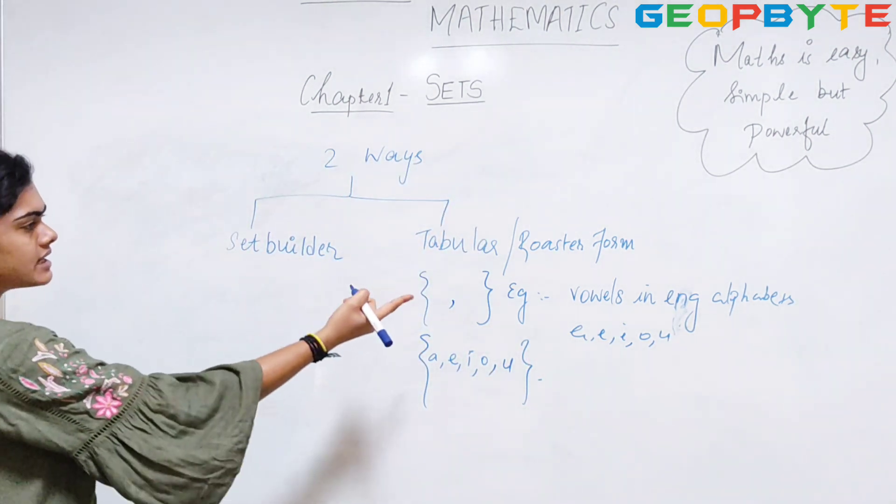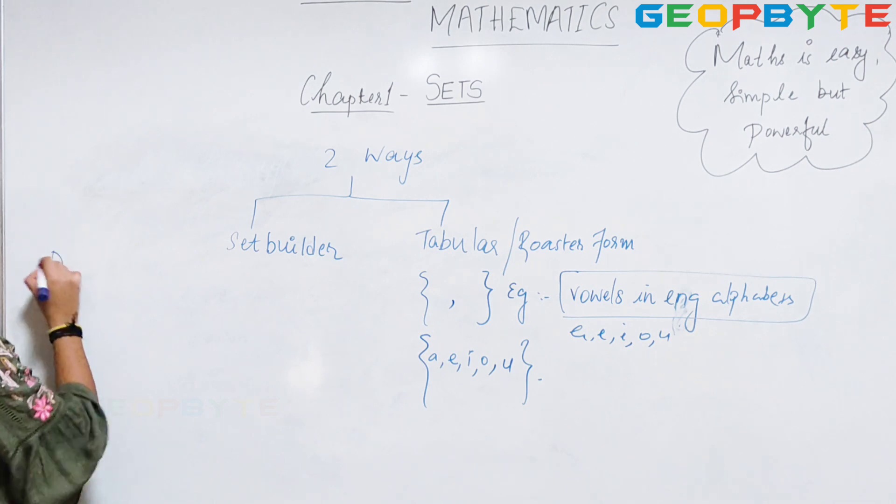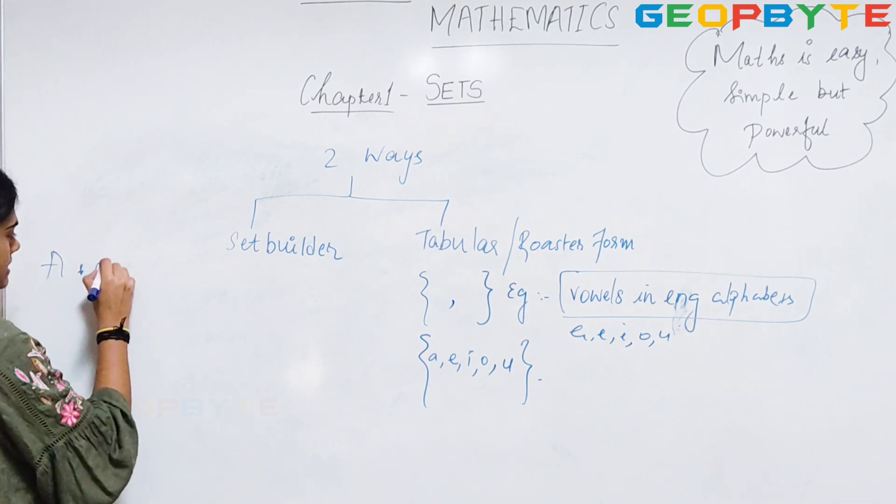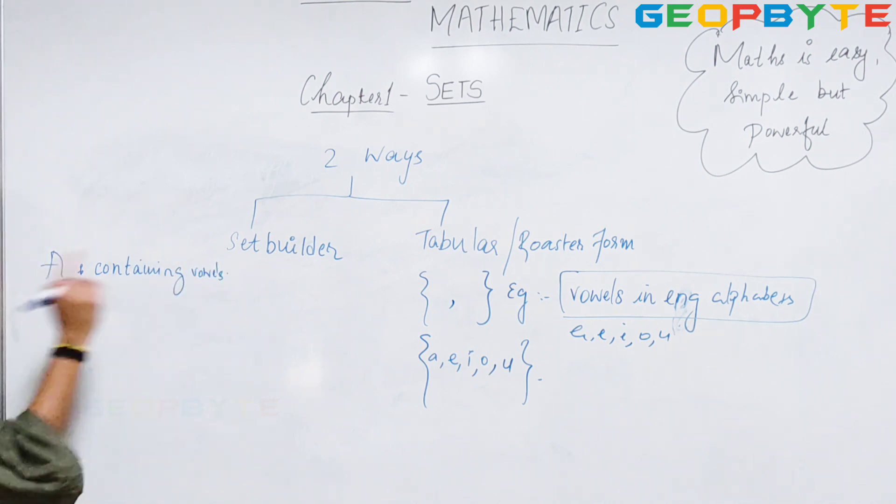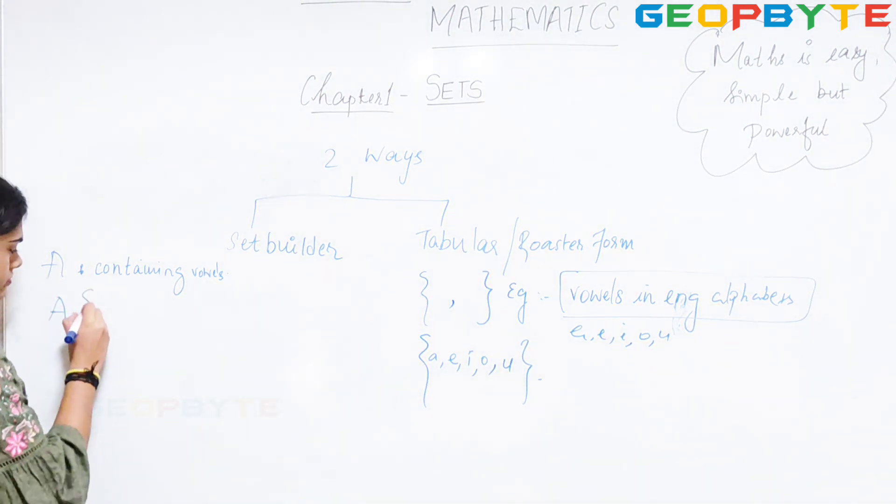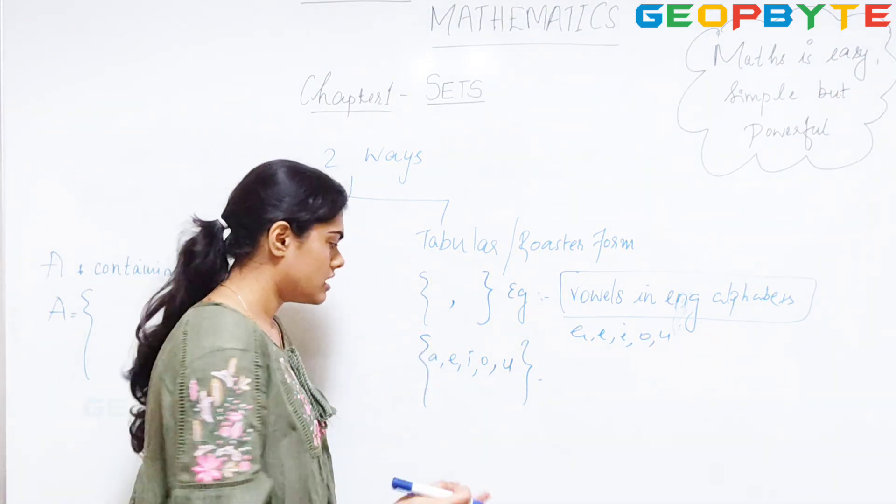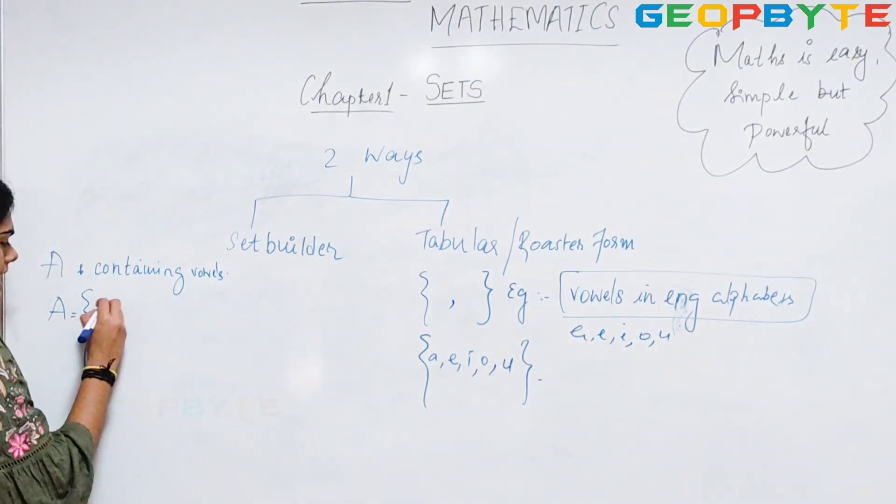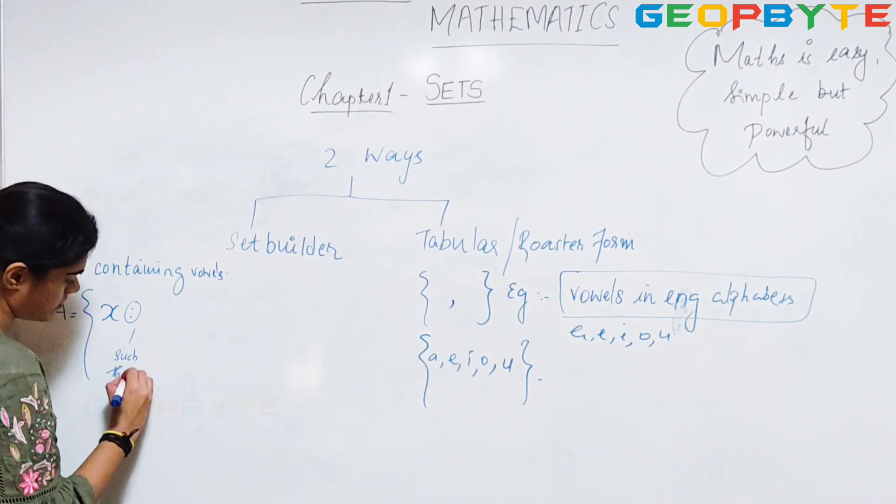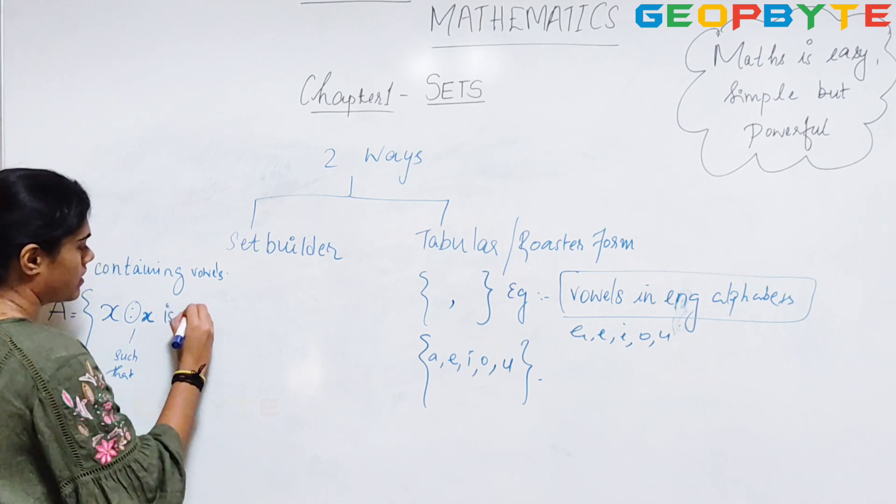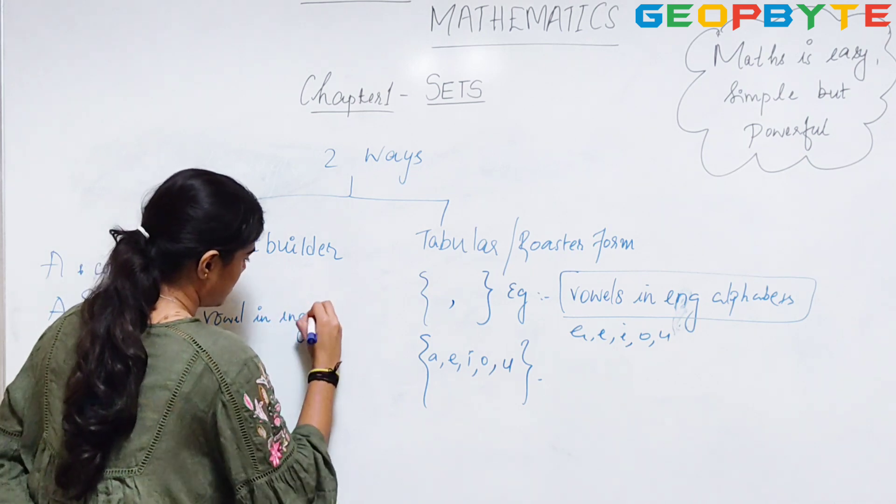In case of set builder form, I can take this as my set A, where A is a set containing vowels. In set builder form, I can write it as A equal to, I can take any variable like X, Y, or Z, which can represent the elements. If I take X, then X is such that X is a vowel in English alphabets.